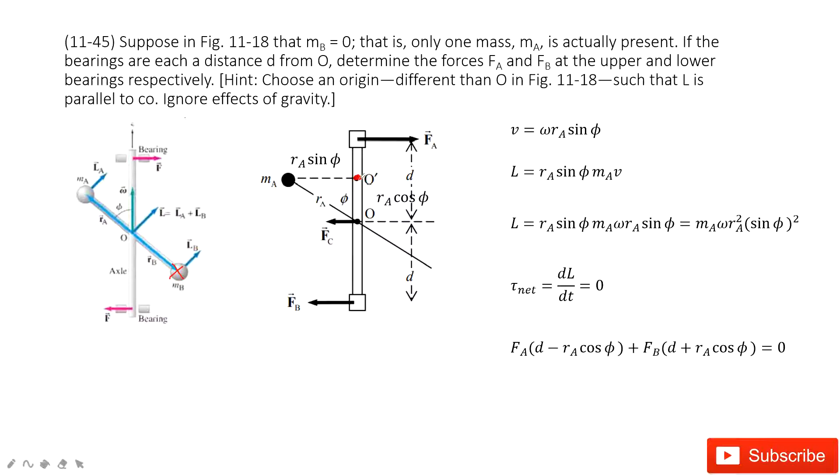When this does the rotation, it rotates in this way with omega. When it rotates in this way, we can see only mass A exists. So first we need to determine the velocity for A.